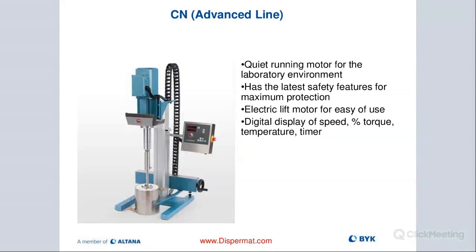Then we offer the CN, which is kind of a higher-end model than the CV. You have all the same safety features, but you're able to really upscale within the same model family. I can go up to about 50 gallons of material with a CN 100, which allows you to disperse large volumes for pilot scale. The same machine is also available for small lab scale.